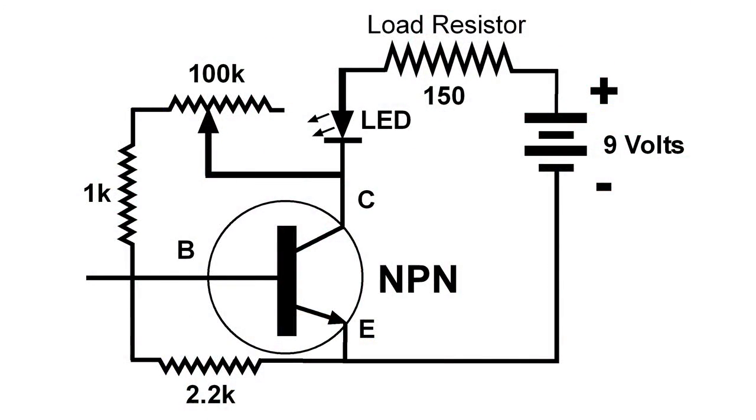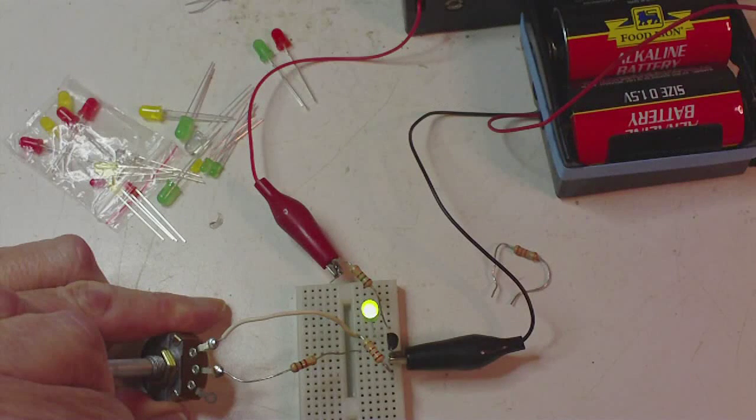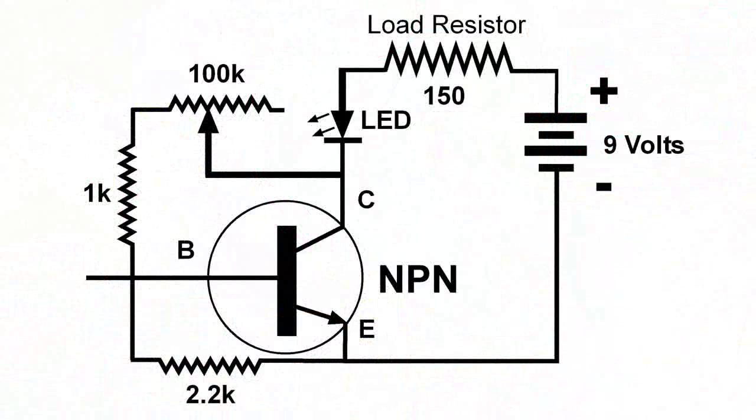In the video demonstration, the LED gets brighter when the 100K variable resistor, when that pointer is moved all the way to the left. In other words, that 100K resistor has almost no ohms, and we're only left with the 1K connected to the base. That's the most positive it can be, and that's when the LED is the brightest.